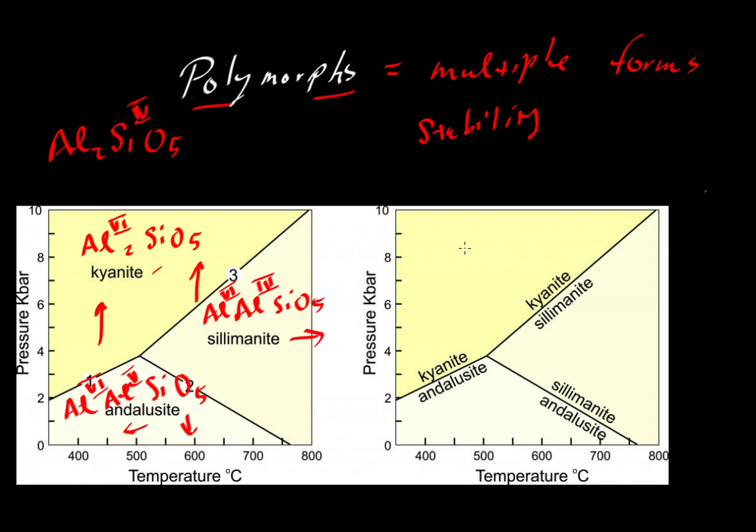We can also think about the Gibbs free energy. If we were to compare the Gibbs free energy at this point here, we're in the kyanite stability field - a little above 6 kilobars and a little over 400 degrees centigrade.